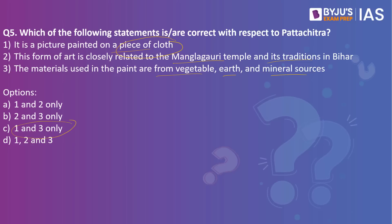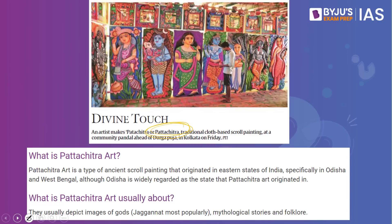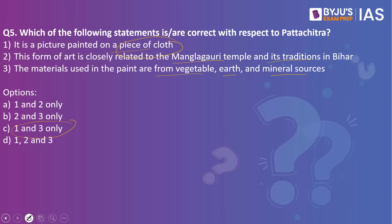Pattachitra is closely related to Jagannath and the temple traditions in Puri, depicting images of gods — most popularly Jagannath — and mythological stories and folklore. It is not in Bihar; it originated in Odisha and a few parts of West Bengal. Odisha is widely regarded as the state where Pattachitra originated. Regarding the third statement: materials are indeed from vegetable, earth, and mineral sources — black from lamp black, yellow from Haritala stone, red from hingula stone, and white from crushed, boiled, and filtered conch shells.